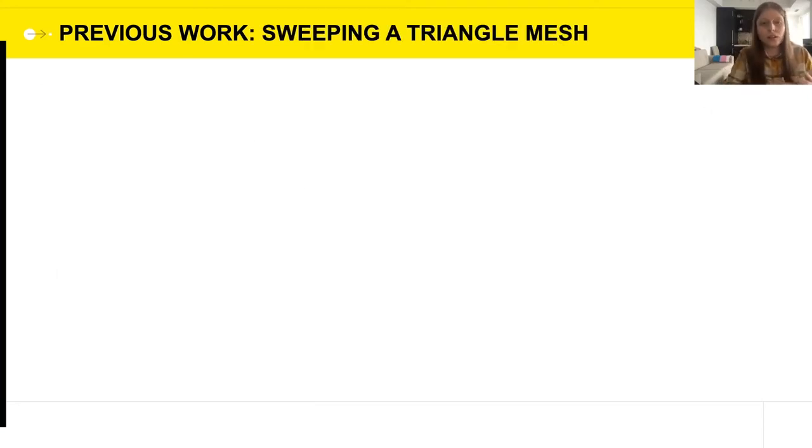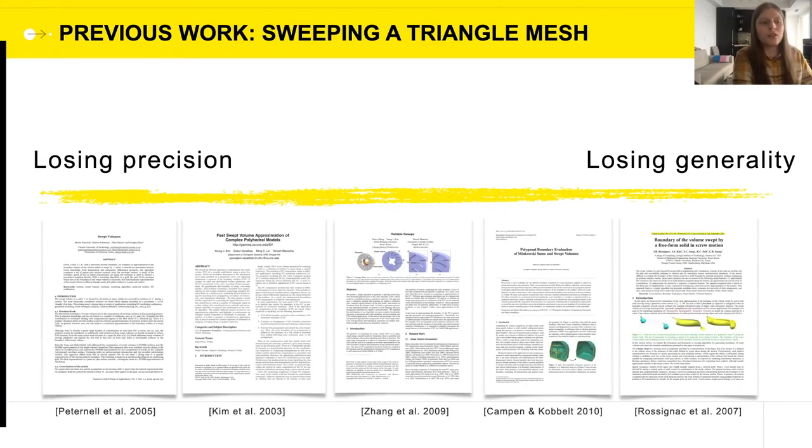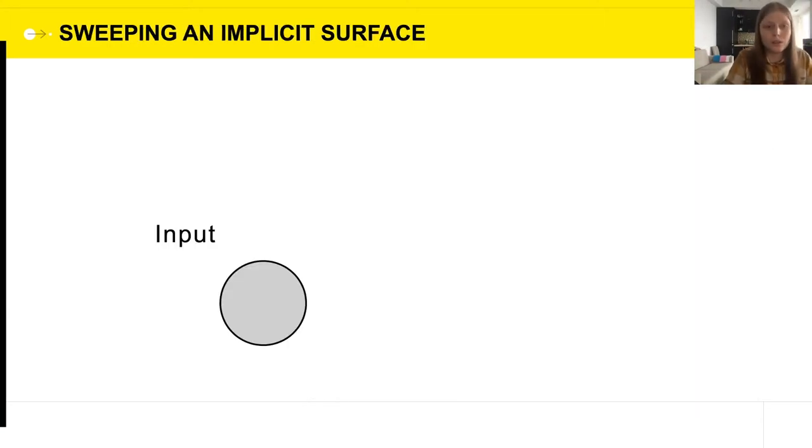More recently, there have also been many works about sweeping triangle meshes, and we can place most of these in a spectrum between sacrificing precision by performing certain conversions or approximations versus sacrificing generality by computing Swept Volume very well, but only for certain inputs or certain trajectories. This is a trade-off we wouldn't like to make, so what we're going to do from now on in this talk is forget about triangle meshes and instead consider the problem of sweeping implicit surfaces.